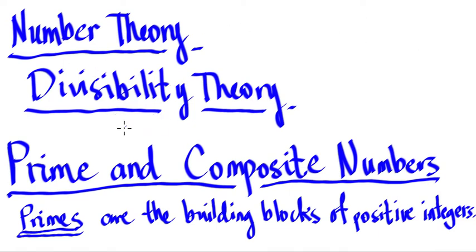In this next video on number theory, we're going to talk about the prime and composite numbers, its formal definition, and the way we look at it in the perspective of number theory. We're still in the part of number theory, divisibility theory, and the fundamental theorem of arithmetic. So let's start.